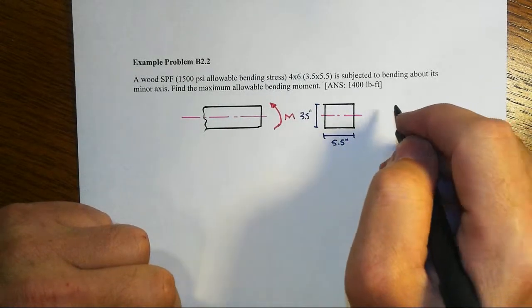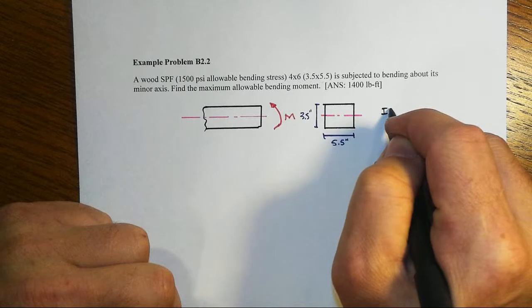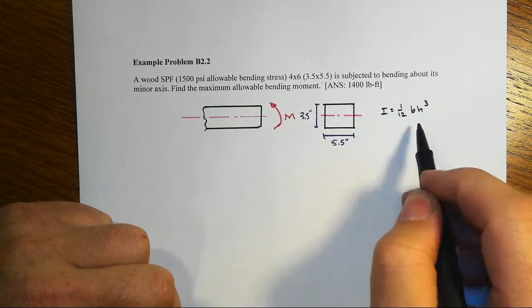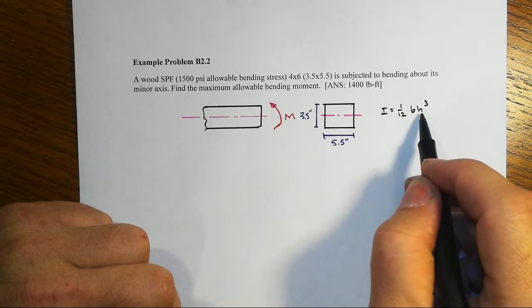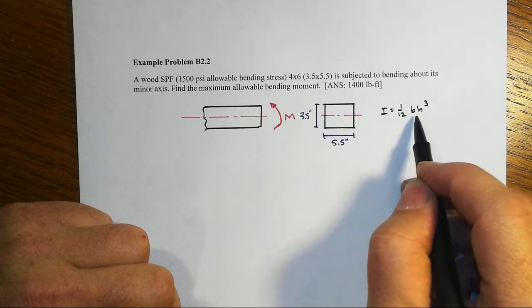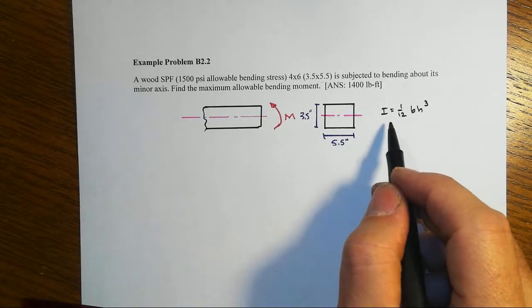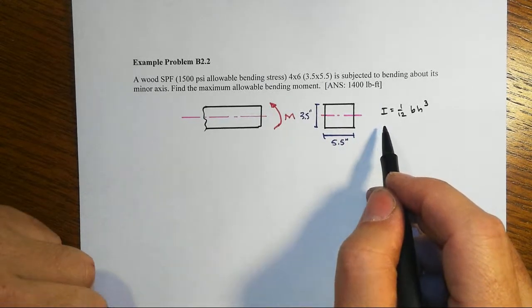This one here then, our I, which will be equal to 1/12 bh cubed, we have to put the b as the 5.5 and the h as the 3.5. If we turned the cross-section and bent it about the other axis, then it would have a much larger second moment of area.